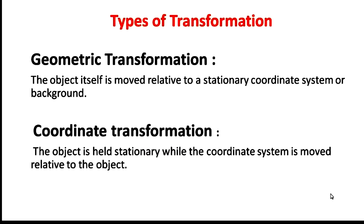There are two types of transformation. The first one is geometric transformation, where the object is moved from one coordinate to the other coordinate. The original coordinate changes to the new coordinate because we are moving the object. In coordinate transformation, the object is stationary — it doesn't move. The coordinate system is moved relative to the object.